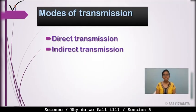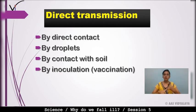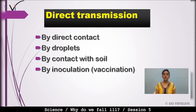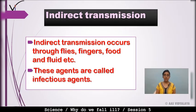Diseases spread through direct transmission and indirect transmission. Direct transmission includes by direct contact, by droplets, by contact with soil, and by inoculation (vaccination). If we are in contact with an infected person, the same disease can transmit to us. Doctors always use one injection per patient and discard it after use to prevent transmission through vaccination.